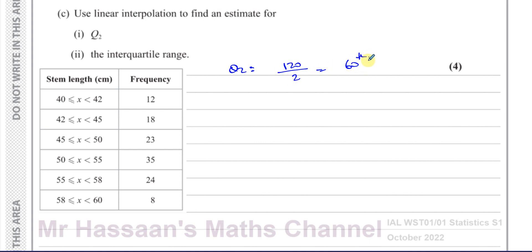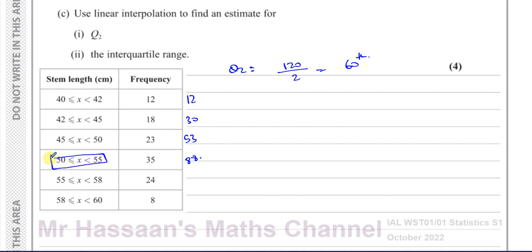We're looking for the entry in the 60th position, so we find which group it lies in using cumulative frequency: 12 + 18 = 30; 30 + 23 = 53; 53 + 35 = 88. So the 60th position lies in the 50–55 group, meaning Q2 is in that group.